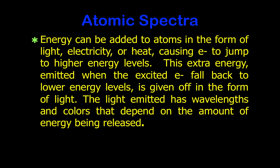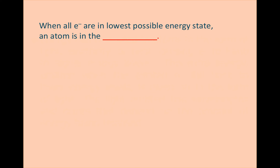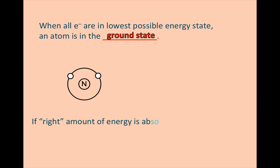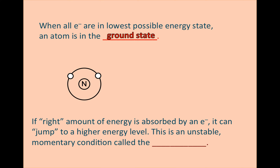For the remainder of this discussion, you will be taking notes in your lab journals. Atomic spectra: energy can be added to atoms in the form of light, electricity, or heat, causing electrons to jump to higher energy levels. This extra energy emitted when the excited electron falls back down to lower energy levels is given off in the form of light. The light emitted has wavelengths and colors that depend on the amount of energy released. When all the electrons are in the lowest possible energy state, an atom is said to be in the ground state. If the right amount of energy is absorbed by an electron, it can jump to a higher energy level — an unstable, momentary condition called the excited state.